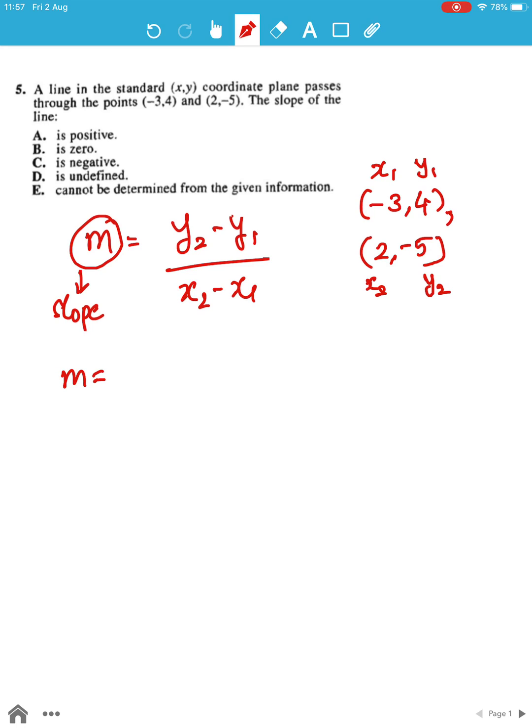So now we find the slope: we have -5 minus 4 over 2 minus (-3). We get the numerator as -9 and the denominator as 2 plus 3, which is nothing but -9 over 5.